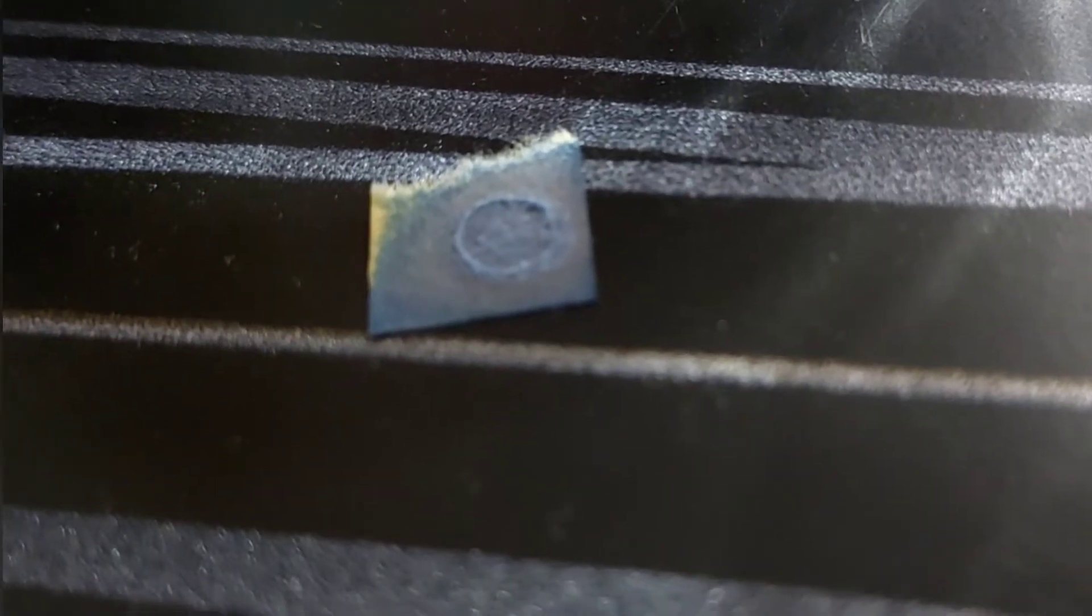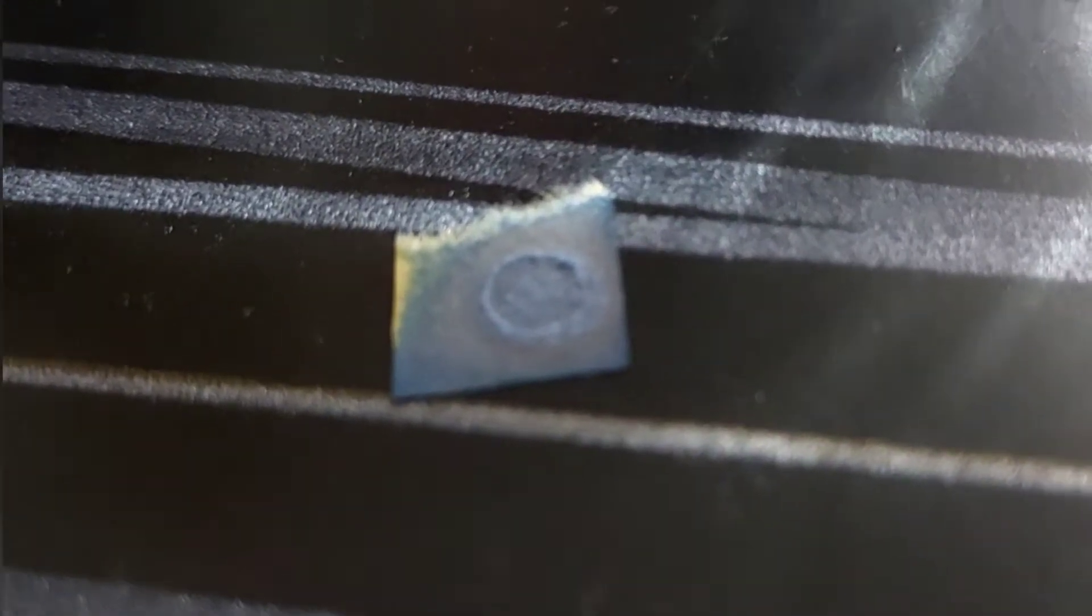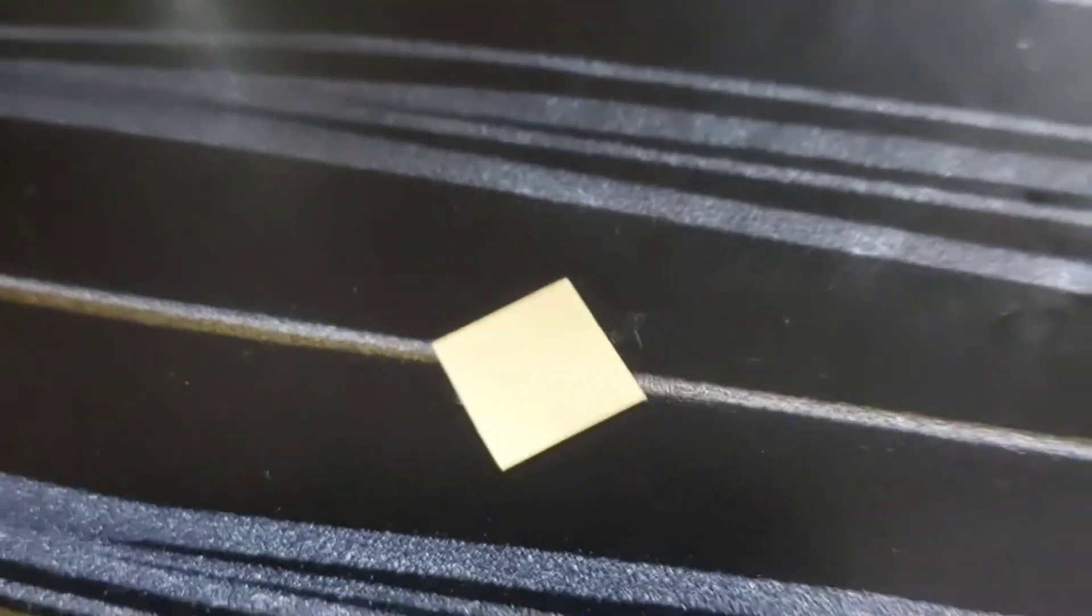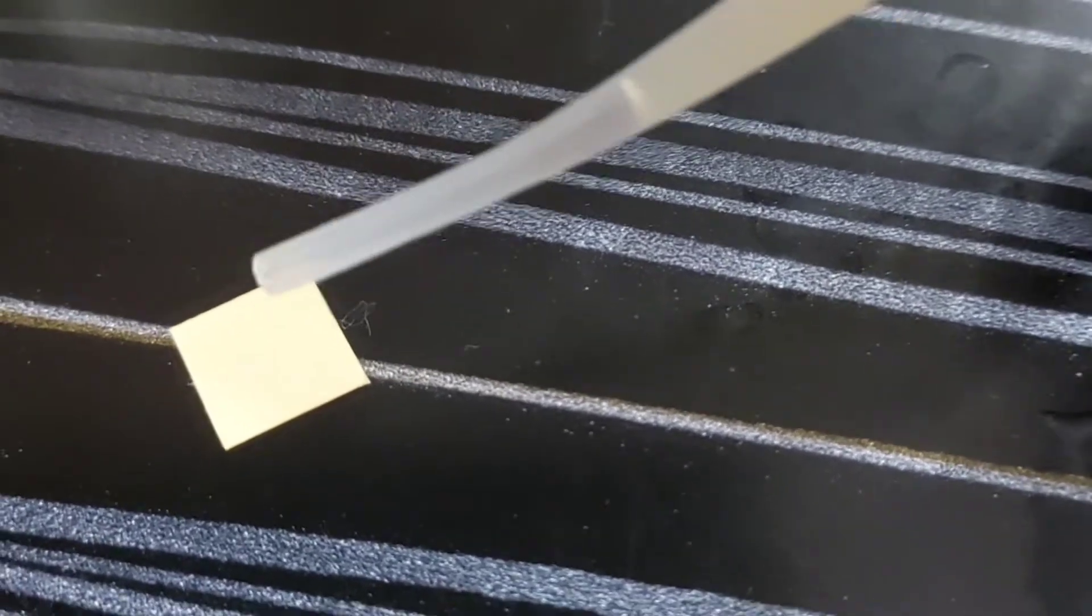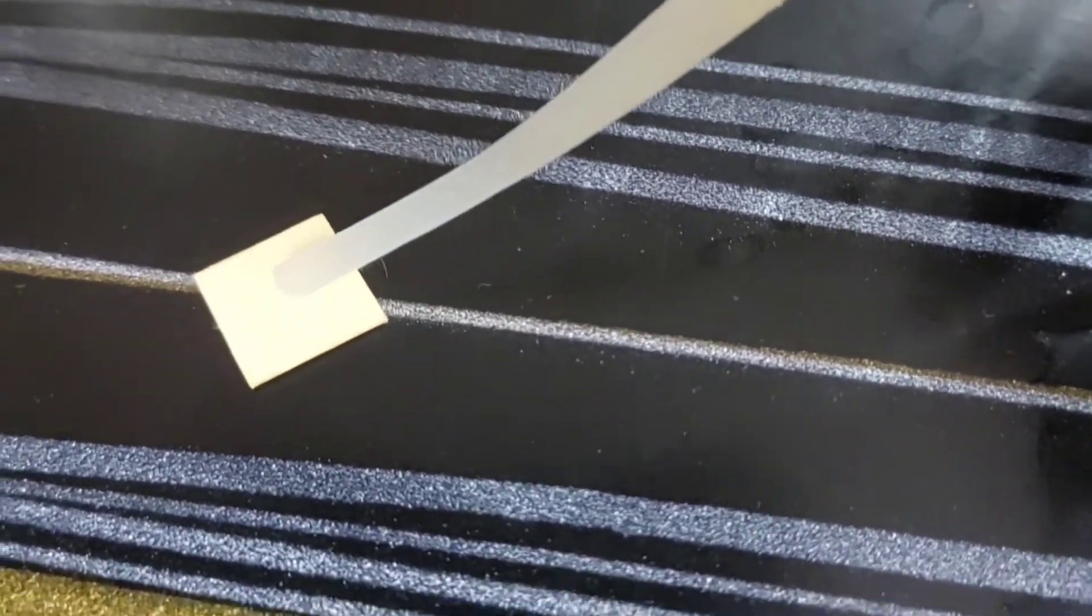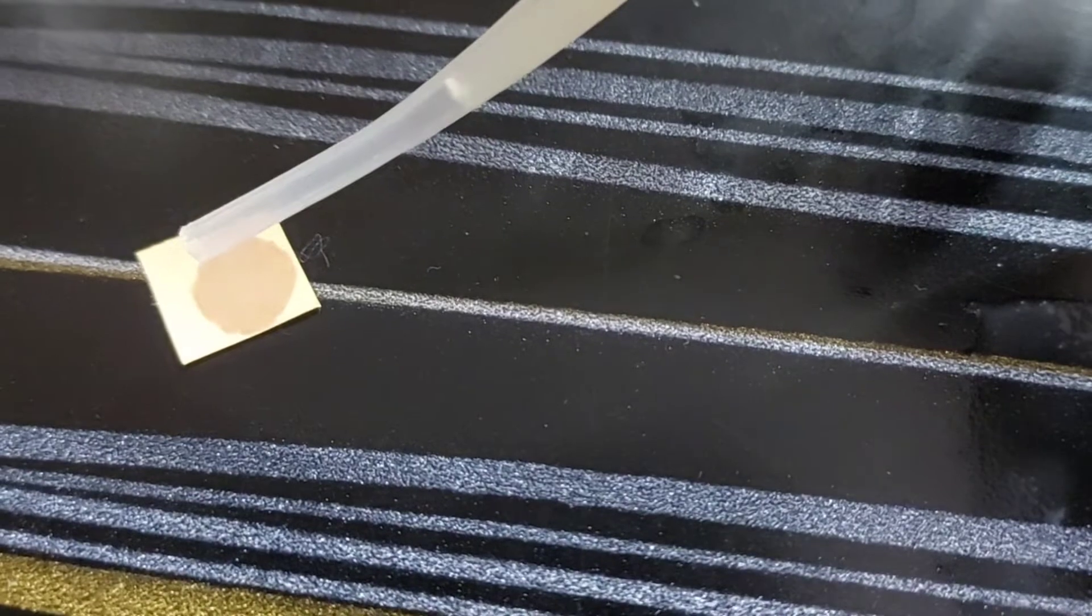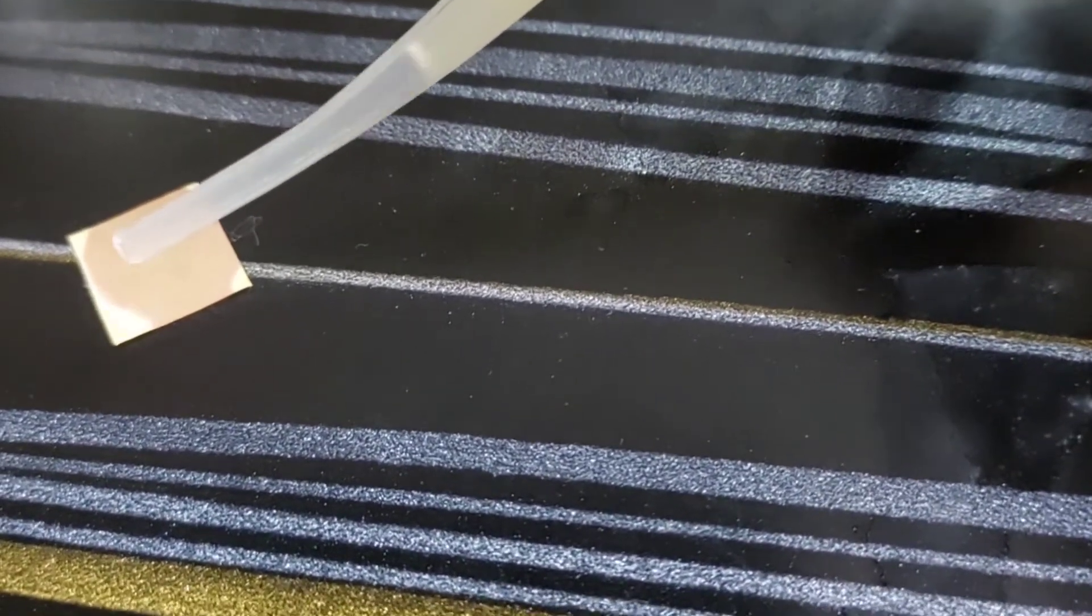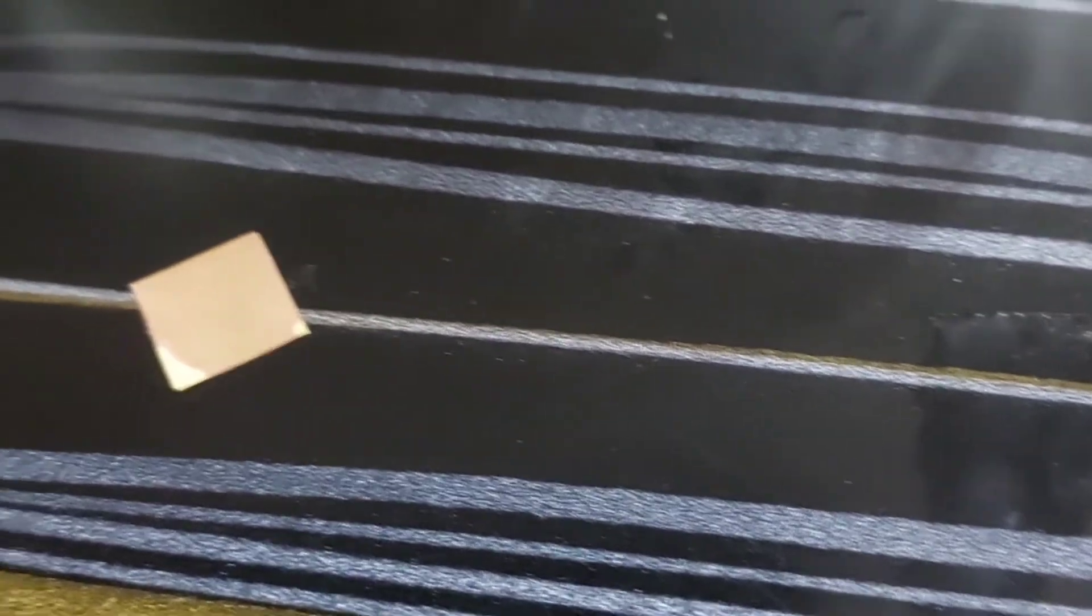Last point for you all: universal indicator is also known as pH paper. Now we have another universal indicator piece and we'll put lemon water on this paper. Here you can see it is converted into light red color, which means it is acidic in nature.